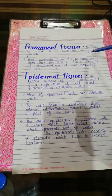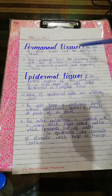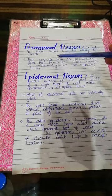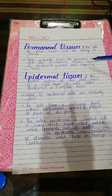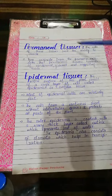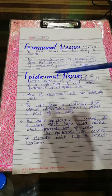Permanent tissue — the characteristic of permanent tissue is that the ability for division is finished. The cells of these tissues lack the ability to divide. They originate from the primary meristem. The permanent tissue consists of epidermal, ground, and supporting tissue.